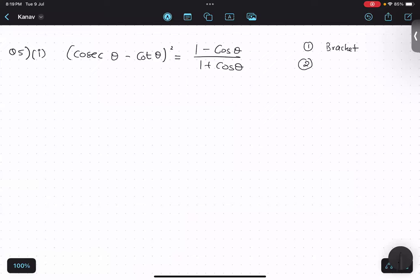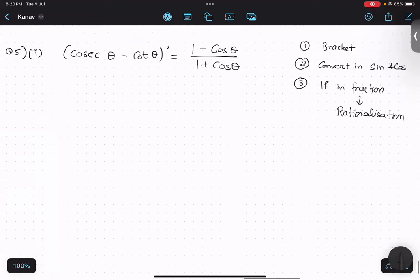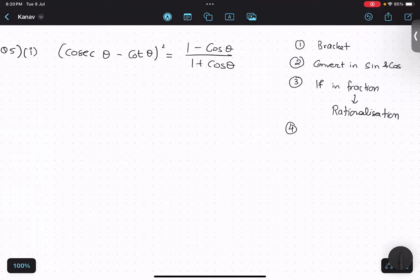Second step to follow is to convert in sine or cos. That is my second step. After that, if nothing is possible, if something is in fraction, go for rationalization. Ninth grade rationalization we have learnt, so that thing we should do. Step number 4: If nothing is possible still, and we are not able to match, solve the right hand side.